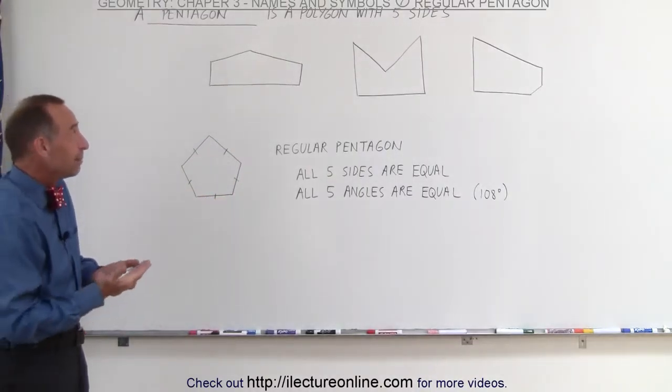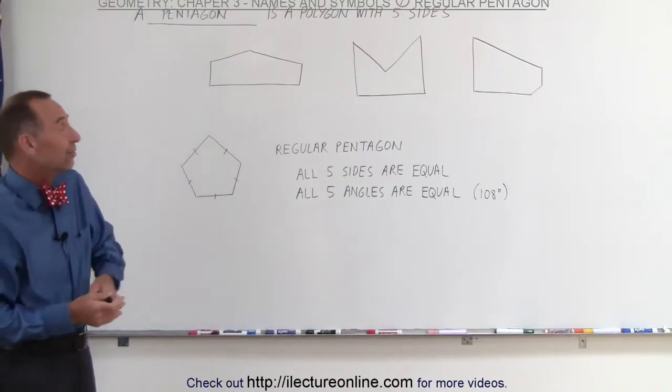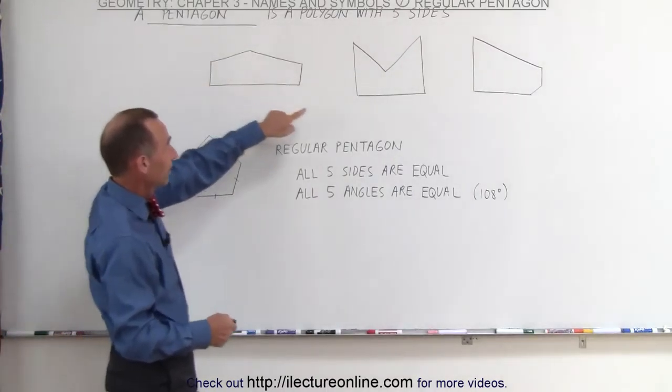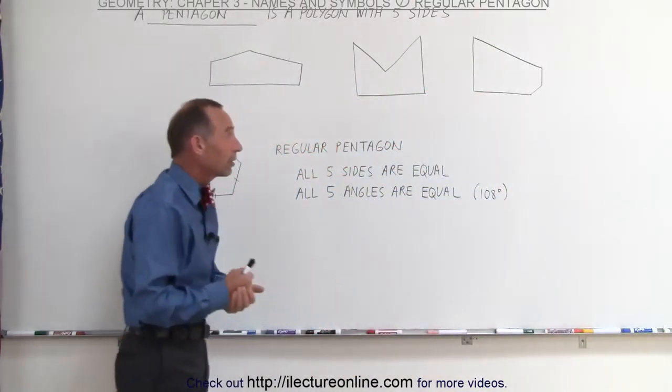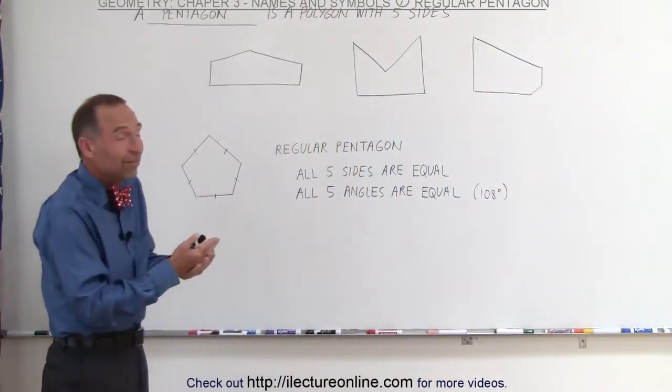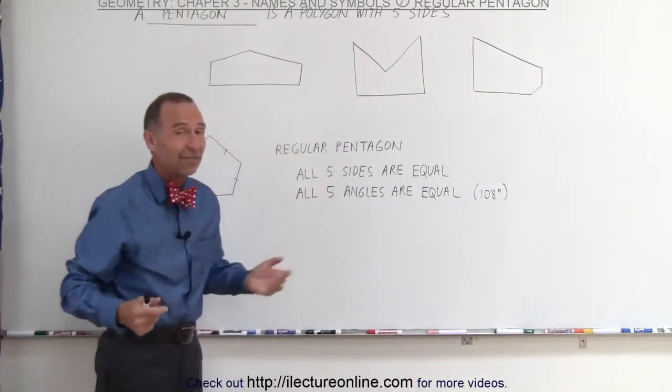But the pentagon is simply a polygon with five sides and it can look like anything that has five sides. It can look like this, like that, like that. These are just simply three examples of what the pentagon can look like because what it means is it just has five sides and these three figures here all have five sides.